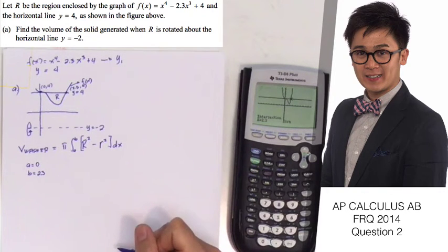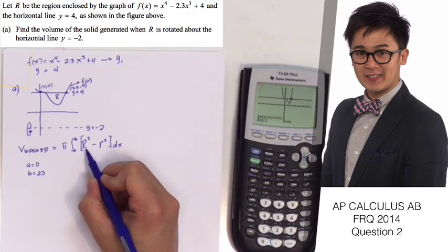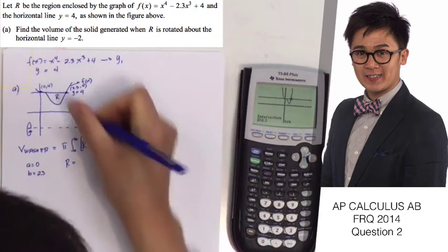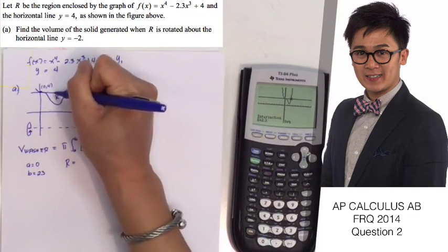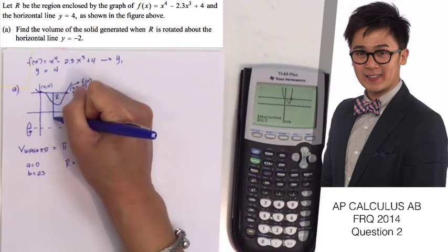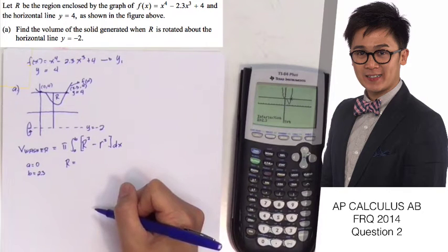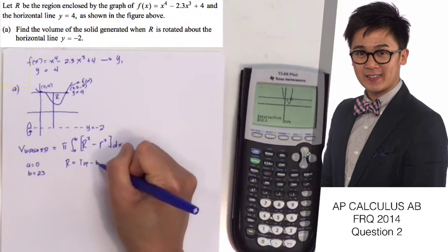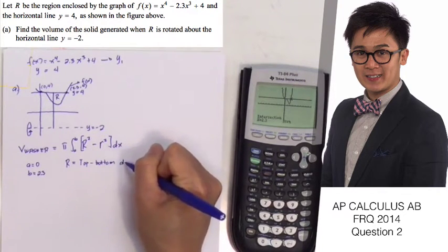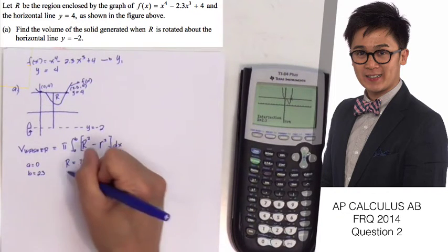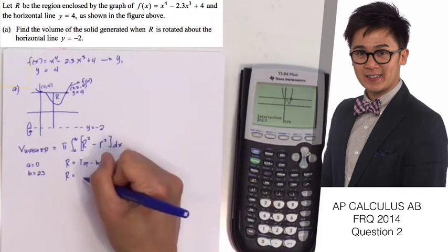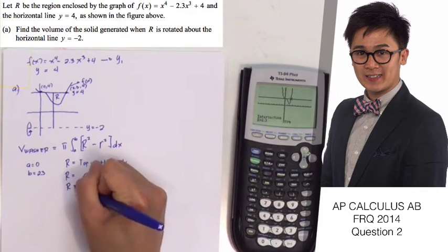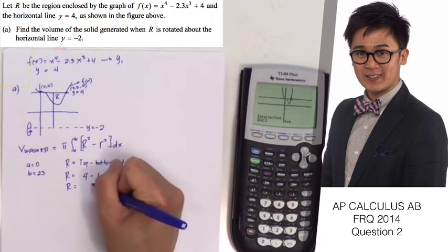Now let's formulate the big R and the small r. For big R, it's the strip from the top to the bottom — top minus bottom. Big R equals the top function, which is 4, minus the bottom function, which is -2. So big R = 4 + 2 = 6.